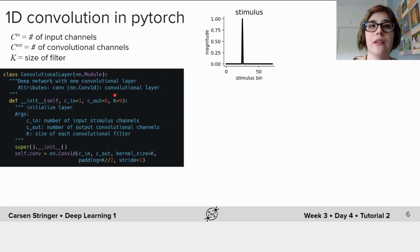Now this convolutional layer is initialized with a few different parameters which you can see here. So the first one is c_in which is the number of input channels, and in this case it's one because we only have one stimulus dimension here.